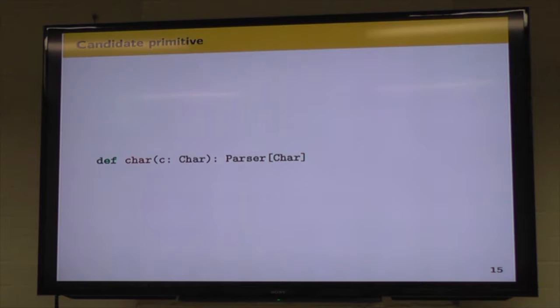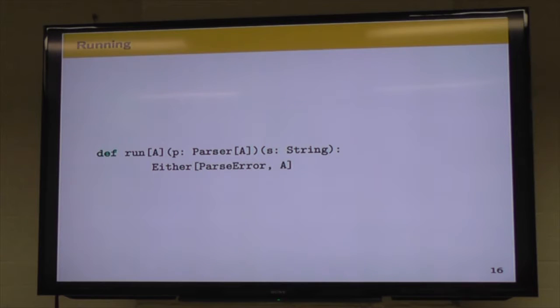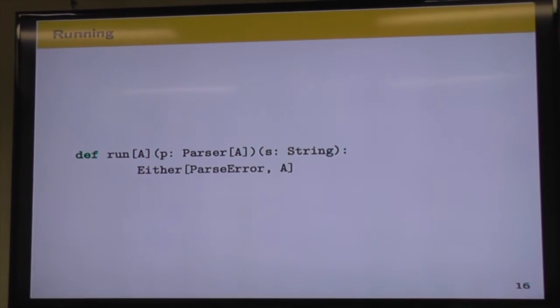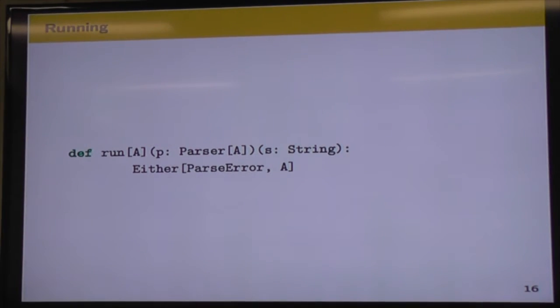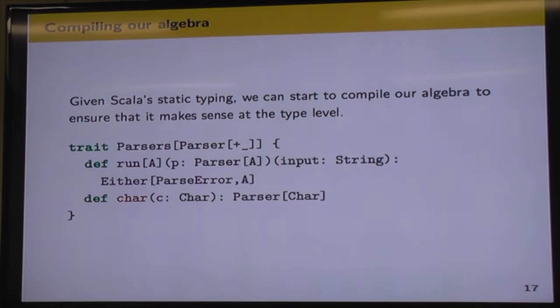So this is a candidate primitive. It's about as primitive and simple as it gets for parsers. We're taking one character and we create a parser that takes our input string and tries to parse that character. You'll notice that we're returning a parser of char. We're not actually returning a char value. So to get our char value back, we need to run our parser on some input. So we have a run function that takes our parser of some type A, takes the input string, and will give us back either a parser error or a value that we are hoping to parse.